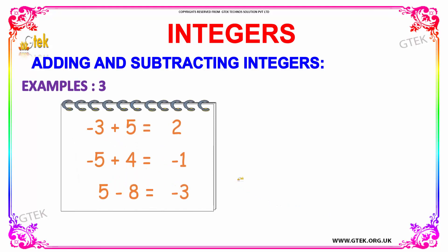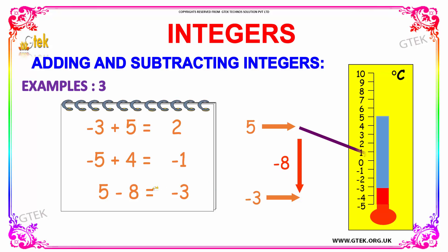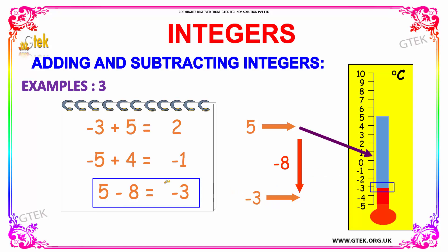Our next example is five minus eight, which is equal to minus three. Here we are going to perform subtraction. From five, we are going to subtract the value of eight — one, two, three, four, five, six, seven, and eight. So you have your answer to be minus three.